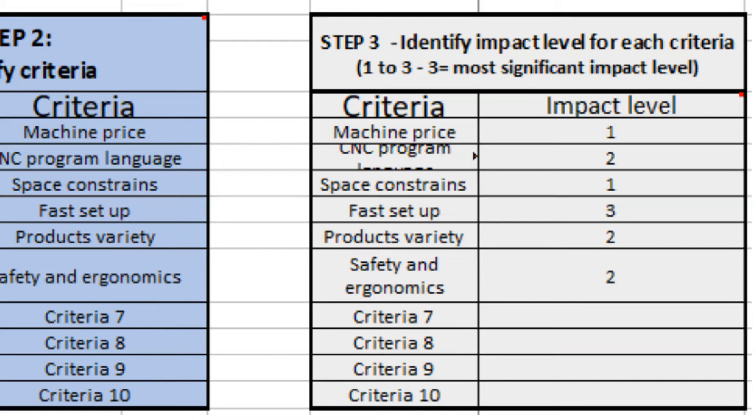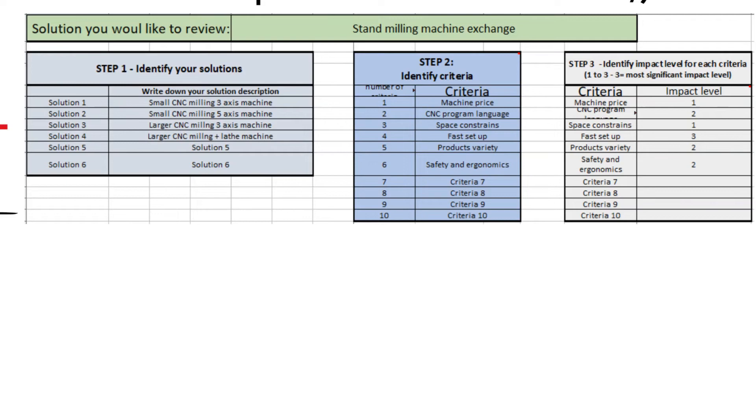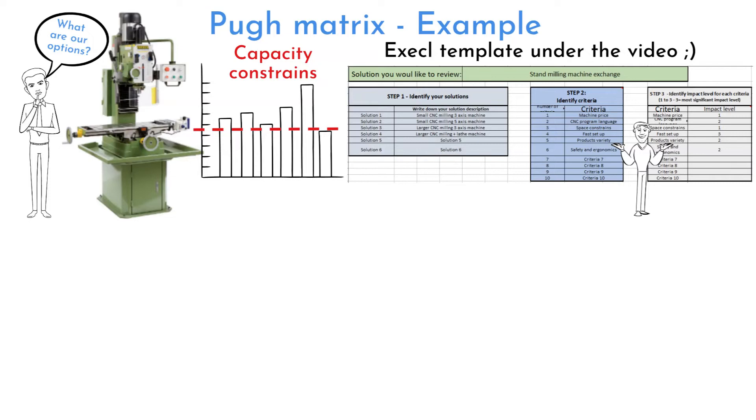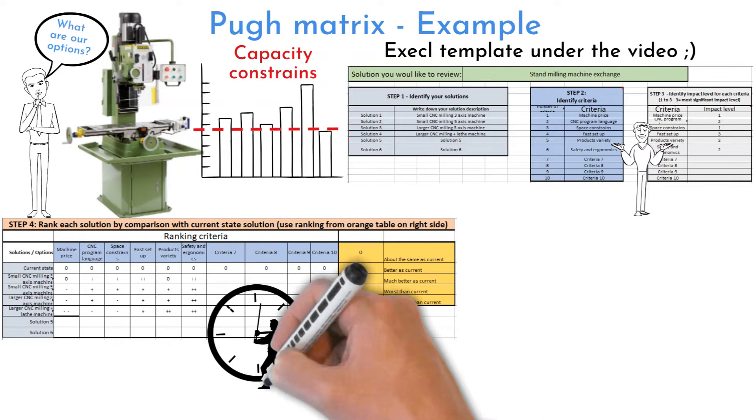Solution ideas and criteria are filled automatically into all required fields once inserted into the first table. Team have carefully discussed each solution and criteria ranking. This was the most time consuming discussion. It was due to different team members' opinions. But finally, they have agreed on ranking.